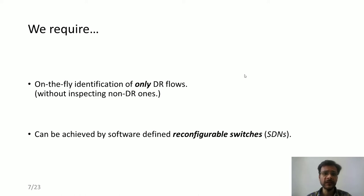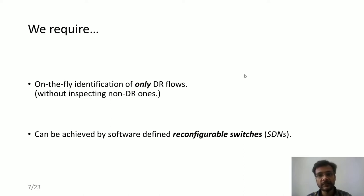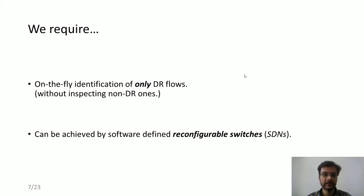Thus, to reduce the overall load on the system and analyze only decoy routing flows, we make a key observation: we need to identify only the DR flows without inspecting non-DR ones. This serves both purposes — improving performance and preserving the privacy of non-DR users — and we think this can be achieved with the help of software defined networks, or SDNs. Let me give a brief background of SDNs.